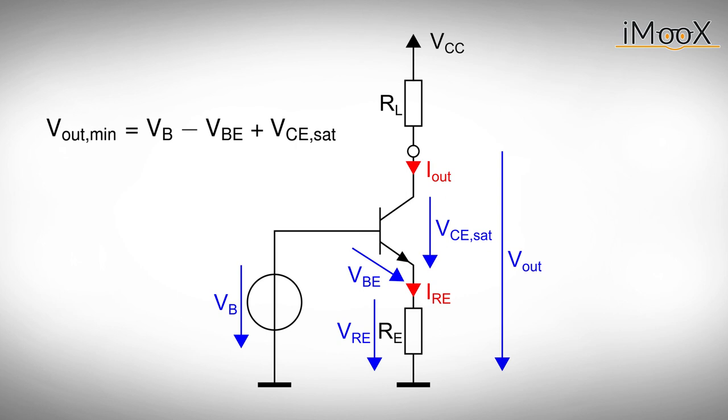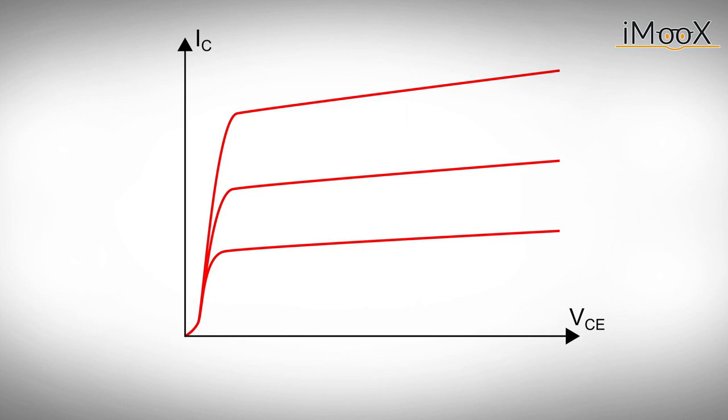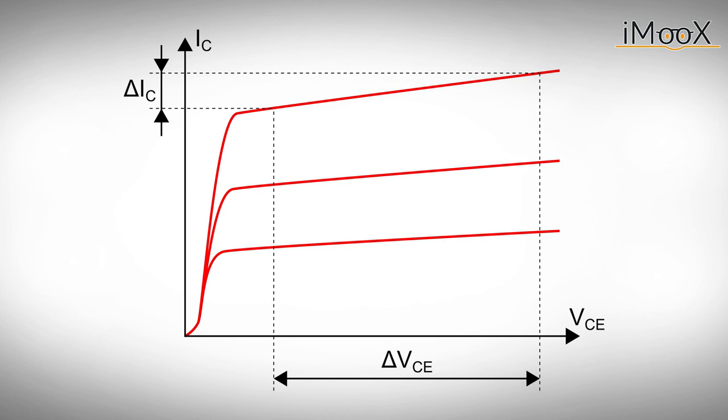Besides the minimum output voltage, another crucial quantity for our current source is output current stability. We could ask how much the output current changes when we manipulate the applied output voltage. Of course we want this change to be as small as possible. Part of this change can be seen in the output characteristic of our bipolar transistor. If the collector emitter voltage changes, so does the collector or output current.